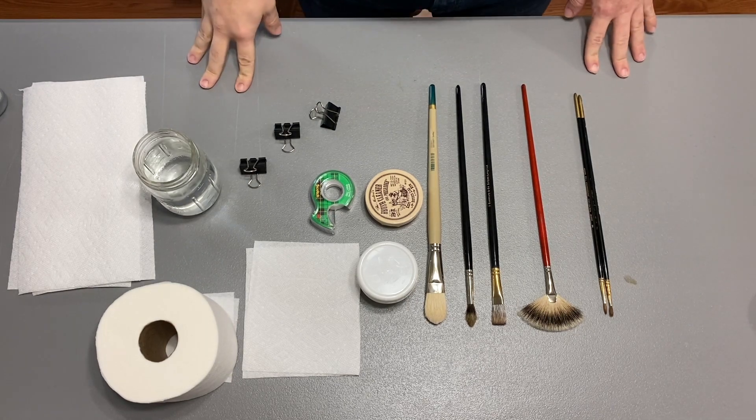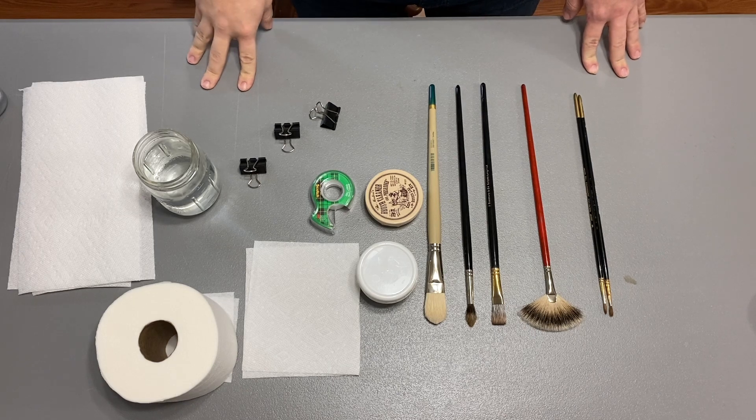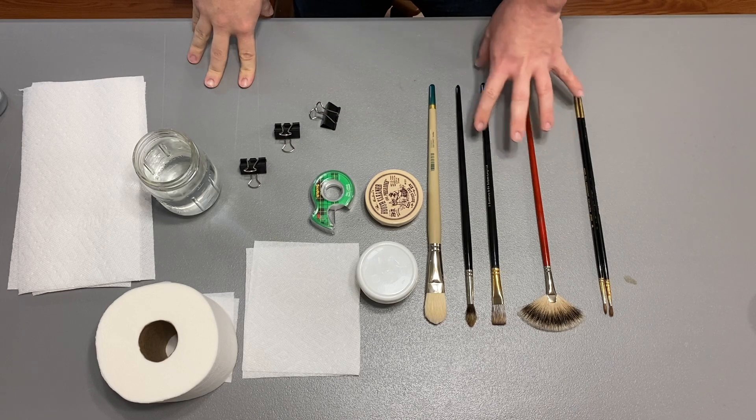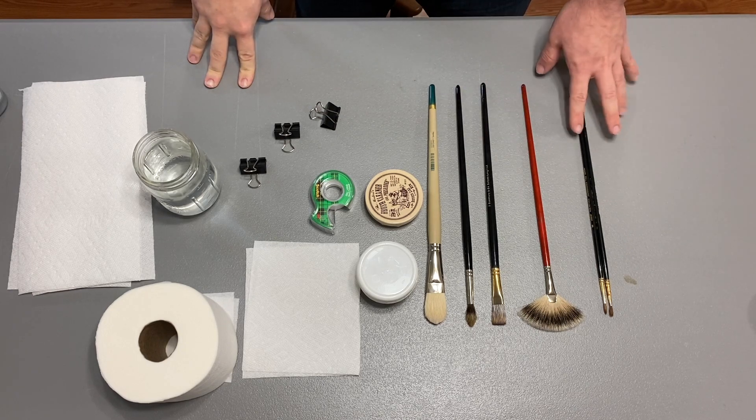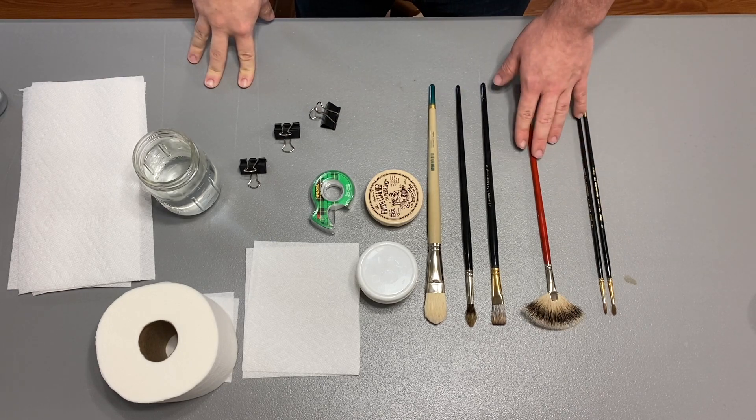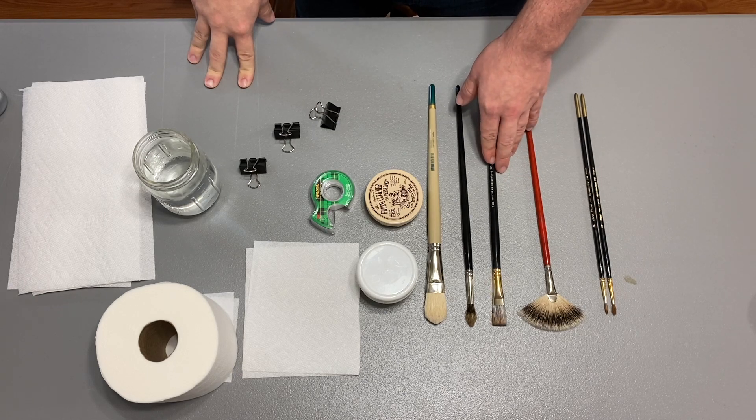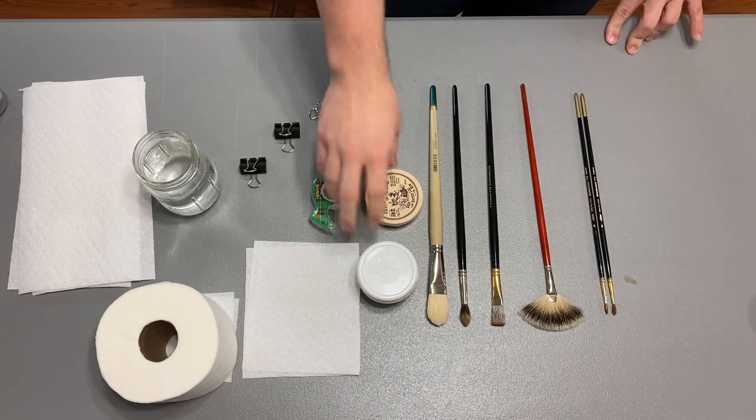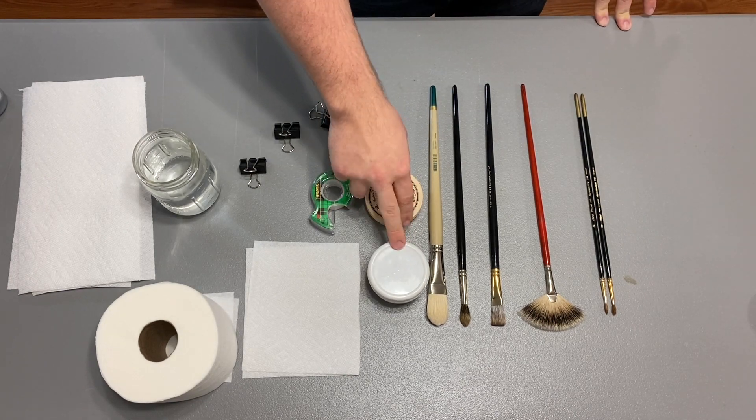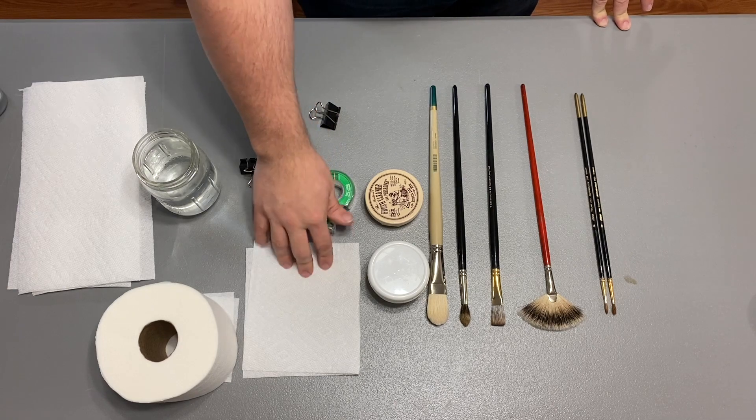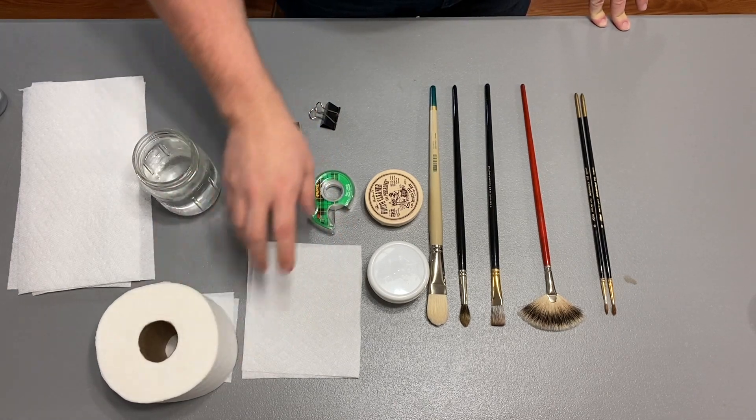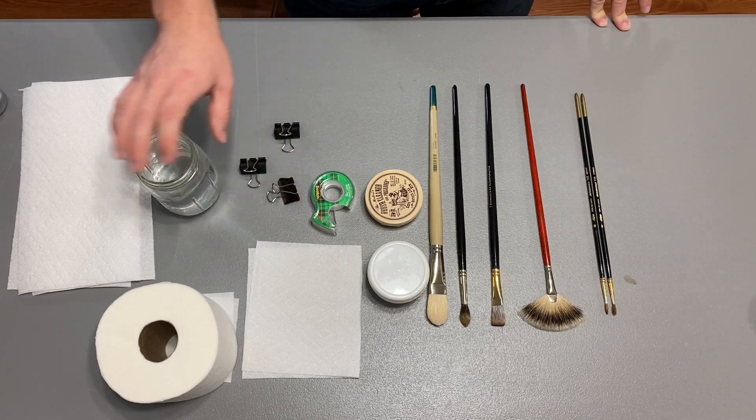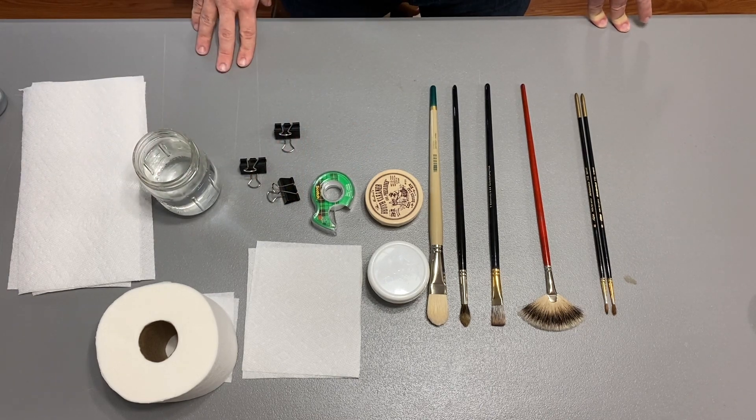So here are the materials you need to clean your brushes and to restore and reshape them. I have a few of my brushes, some small rounds, a badger fan, synthetic mongoose, a natural mongoose, and a big bristle brush. I have my brush cleaners, the soaps, paper towels, toilet paper, tape, office clips, and warm water. So let's begin.